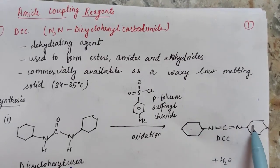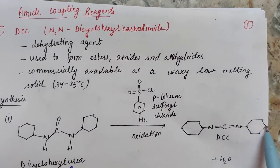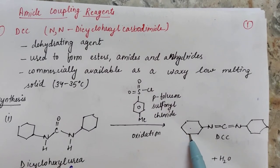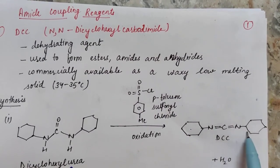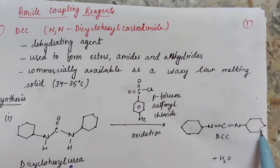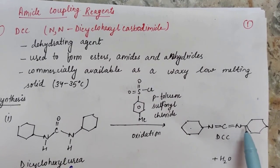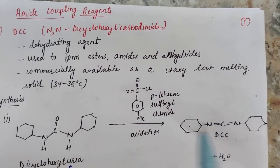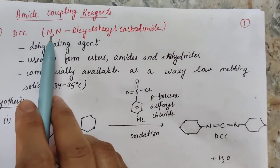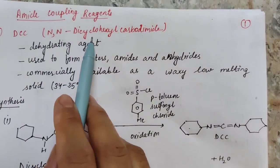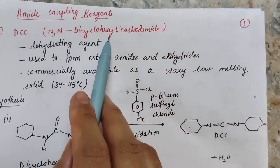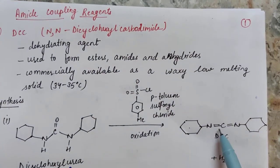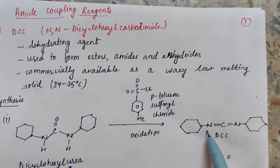DCC consists of two cyclohexane rings — hence 'dicyclohexyl' — attached to the nitrogen atoms, which is why the name starts with N,N-dicyclohexylcarbodiimide.